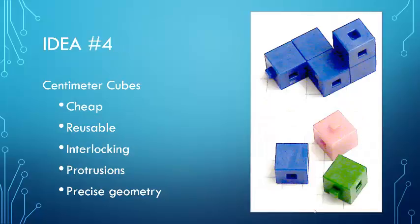Idea number four, the centimeter cubes that you may have seen in math class, they're cheap. They're reusable. They interlock, so that's good. But they do have those little protrusions on them, which can be problematic. And they, again, they do have a very precise geometry, because they're just made out of plastic, and so they won't bend and things like that.